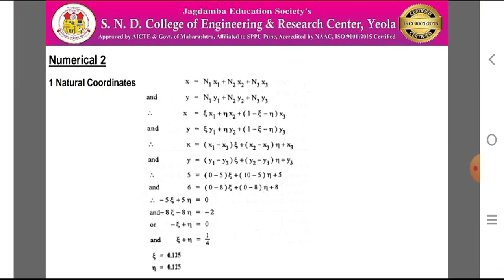Substituting the coordinate values: 5 = (0 − 5)·epsilon + (10 − 5)·neta + 5, and 6 = (0 − 8)·epsilon + (0 − 8)·neta + 8. This gives −5·epsilon + 5·neta = 0 and −8·epsilon − 8·neta = −2, which simplifies to epsilon = neta and epsilon + neta = 1/4. By solving, epsilon = 0.125 and neta = 0.125.